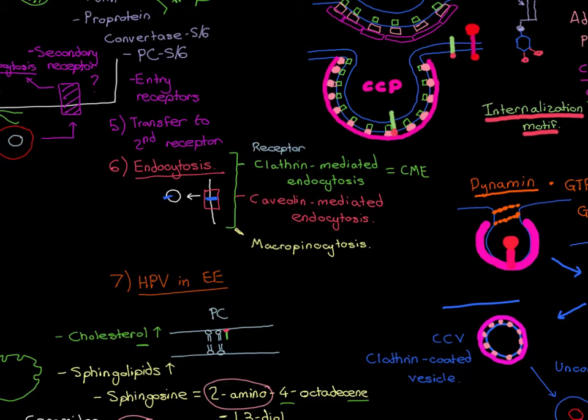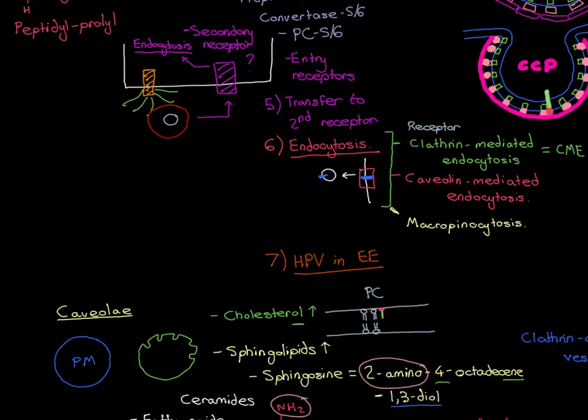Of the three processes that we've been through, macropinocytosis is the least well understood of the three. Clathrin-mediated endocytosis was the best understood. Caveolin-mediated endocytosis came in second place, and macropinocytosis comes in last place as far as how much we know about it is concerned. It also has a number of differences compared to clathrin-mediated endocytosis and caveolin-mediated endocytosis, as you'll see when we now describe it.